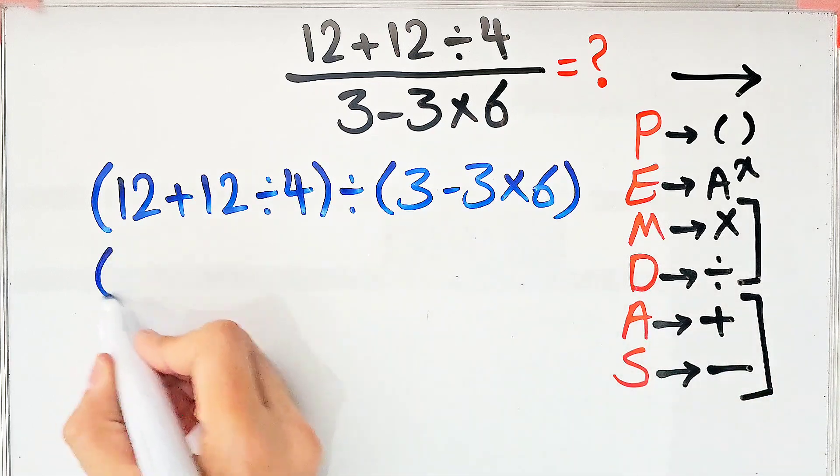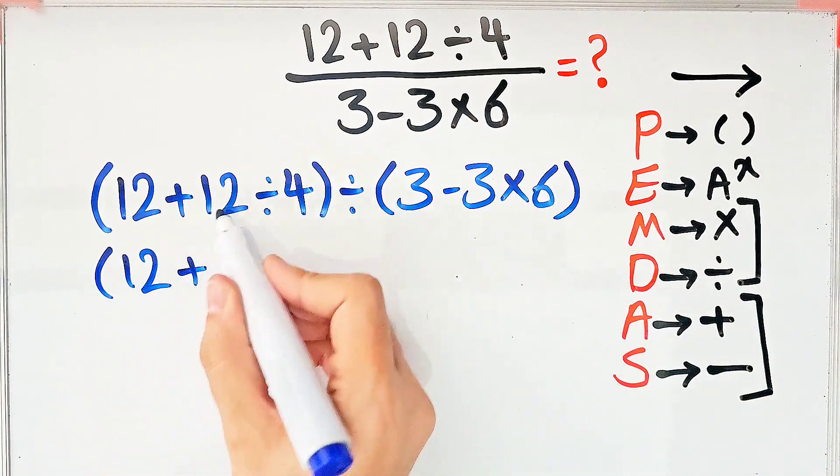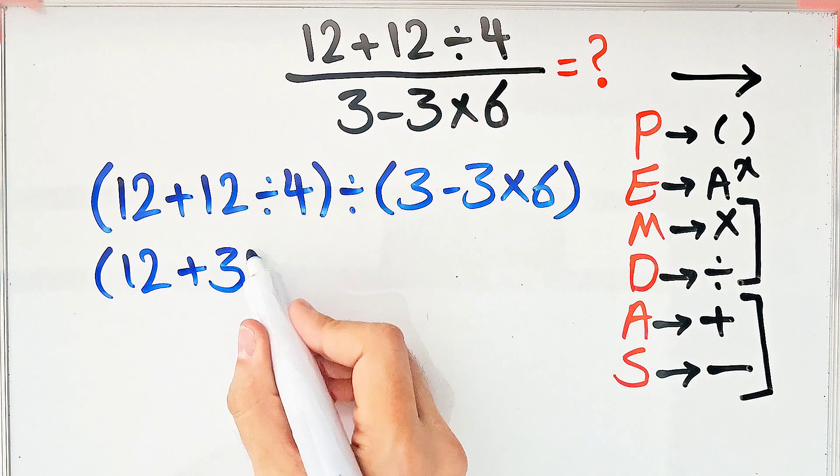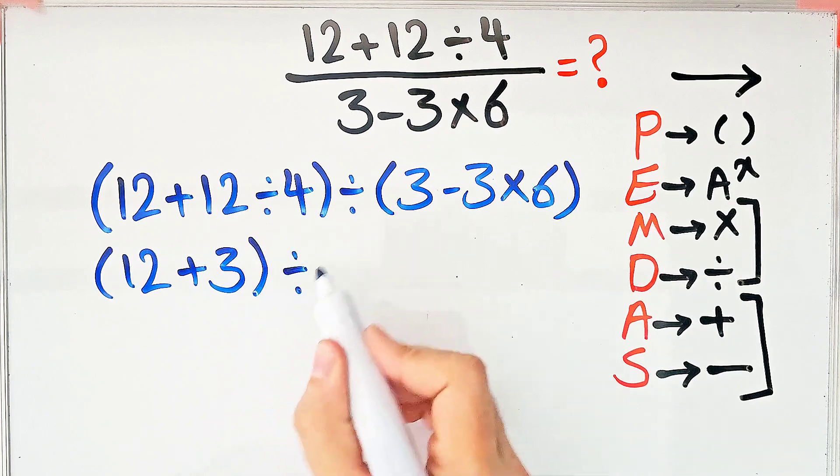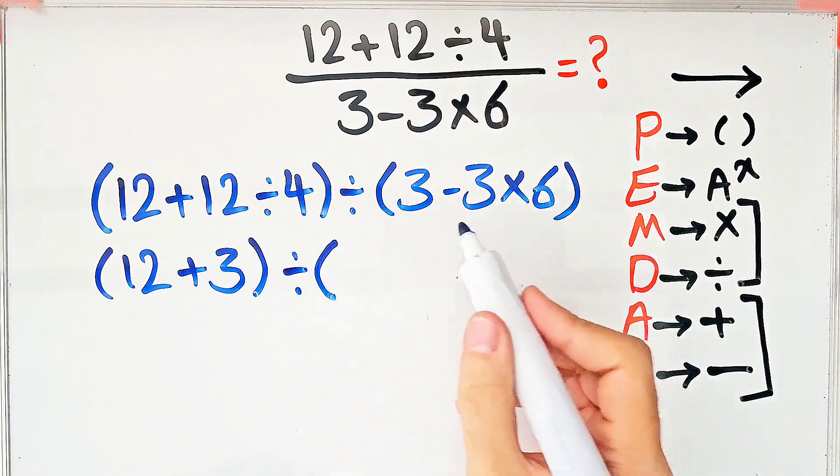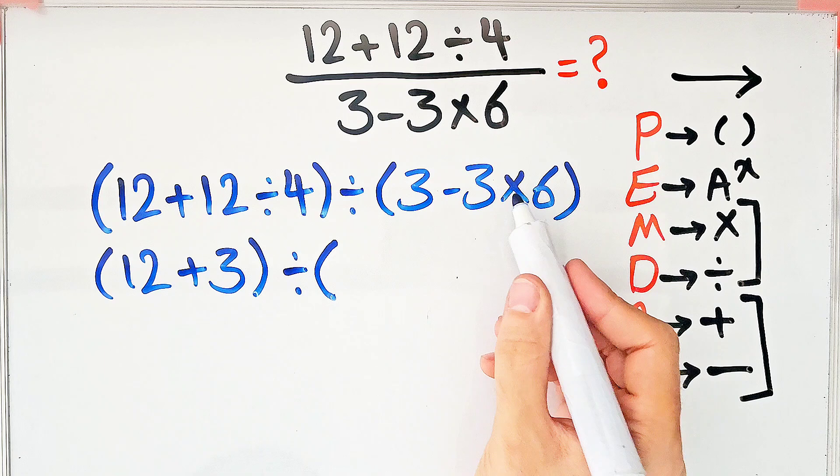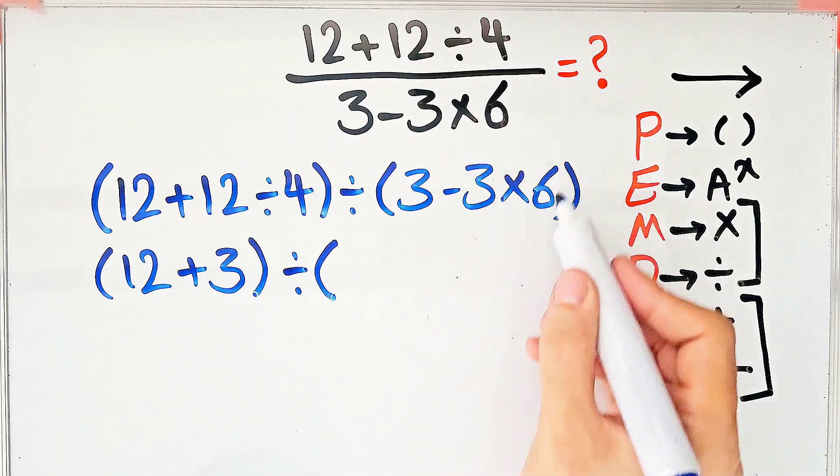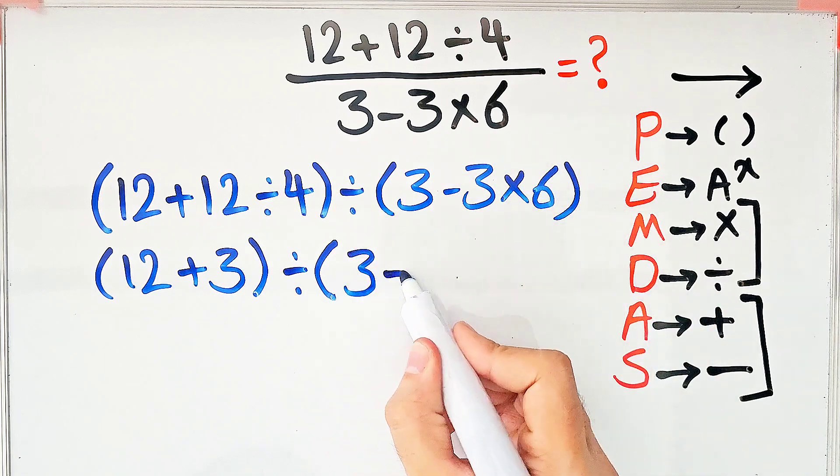First, we simplify the division: 12+12÷4 equals 12+3. Then we look at (3-3×6). In this step, we do the multiplication because multiplication has higher priority than subtraction. We have 3-18 in the second parentheses.